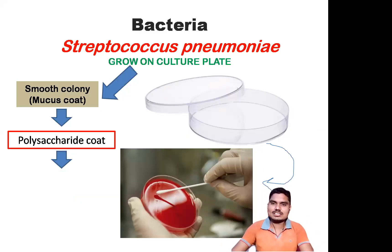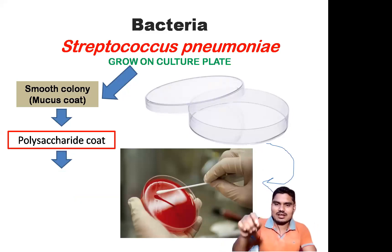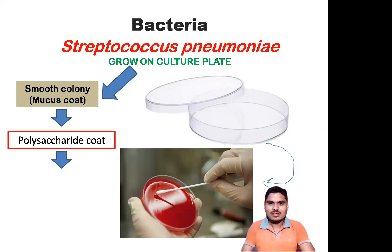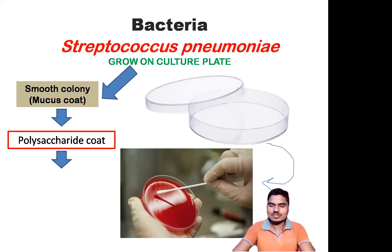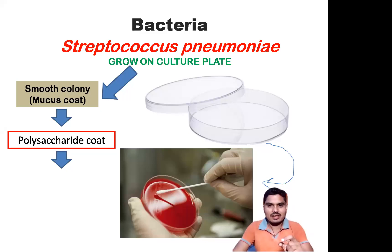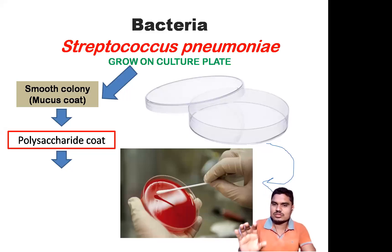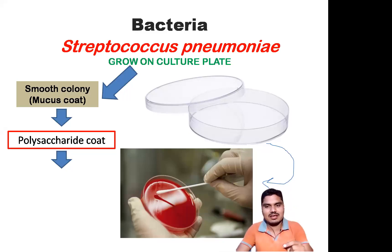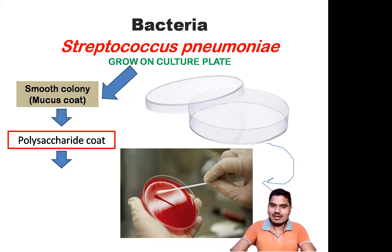He chose Streptococcus pneumoniae — one kind of bacteria — and grew this bacteria on a culture plate. A culture plate is a petri dish that we already use in the laboratory for pollen germination experiments. The petri dish is filled with chemicals that support the growth of bacteria, and that is called culture media.